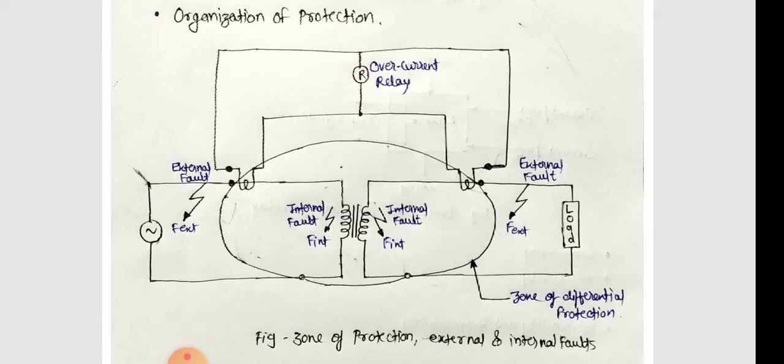Directional relaying creates a zone with finite reach in tripping direction. So this is all about the organization of protection and trip circuit of circuit breaker. We need to organize the protection system in a zone manner.